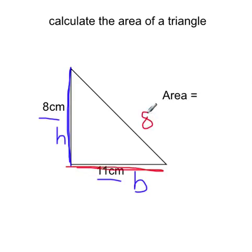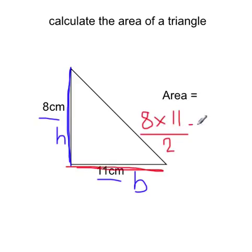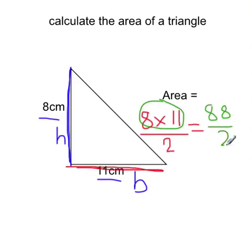So the height is 8cm and the base is 11cm. If we stopped there, that's just the area formula of a square. But we want to find the area of a triangle, so we have to divide by 2. That line is the division sign. So first, let's work out 8 times 11, which is 88. We still have to divide by 2. 88 divided by 2 is 44. Therefore, the area of this triangle is 44cm squared.